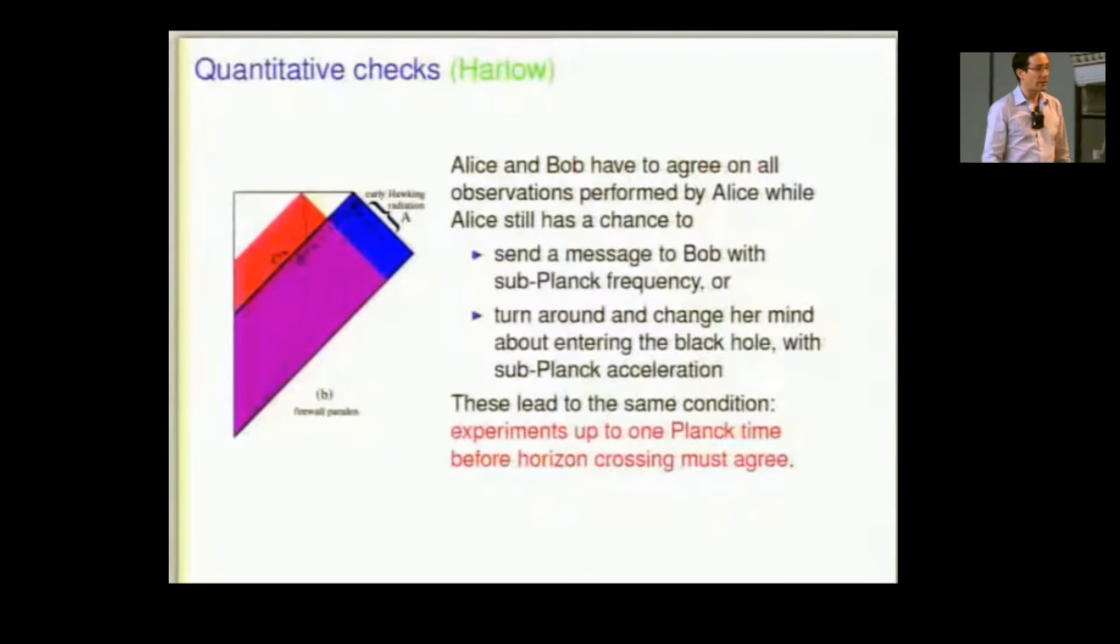Now, I oversimplified slightly. There are still some quantitative checks that one should do to see that this really works out. Alice, on her way in, for some time, still has a chance to send a message to Bob about quanta she encounters on the way in. In fact, she could just change her mind and decide not to fall in after she measures some of these quanta. Accelerate really fast, stop, and go back out.